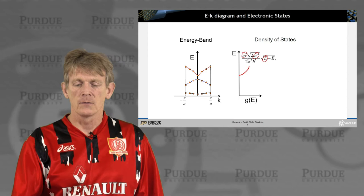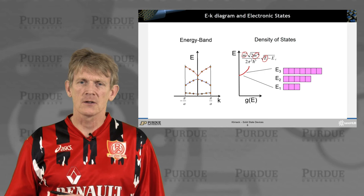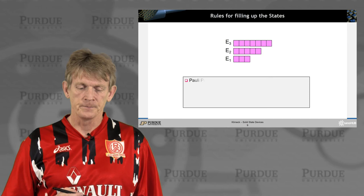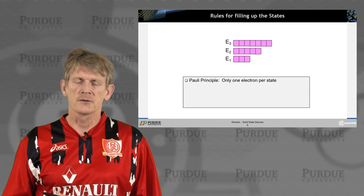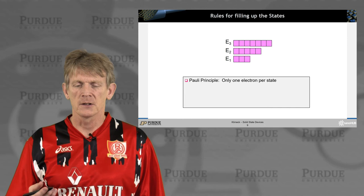Now we're going to look at these density of states as discrete states that we need to fill. For argument's sake, we're going to consider three energy levels, where the lowest one is close to the band edge — three discrete energy levels that might have a variety of states available. The Pauli exclusion principle demands that there's only one electron per state. If we consider spin, there's going to be a spin-up state and a spin-down state at a given energy. For now we're not going to talk about spins explicitly, but you could imagine them being included in these discrete representations.